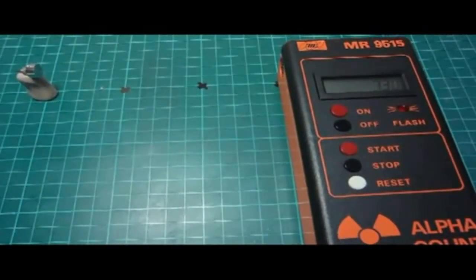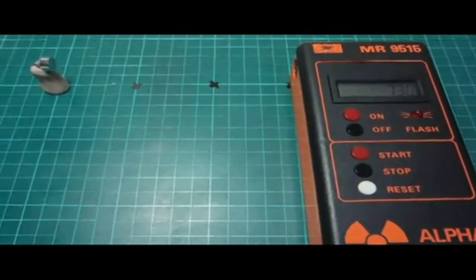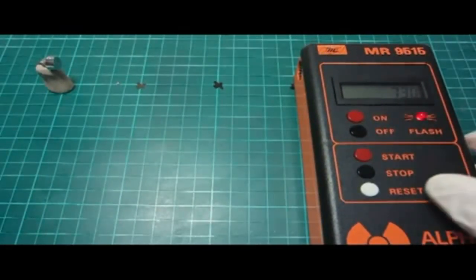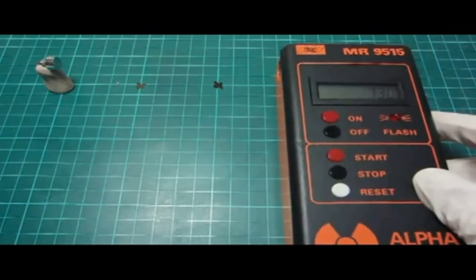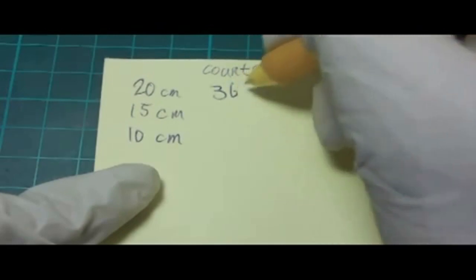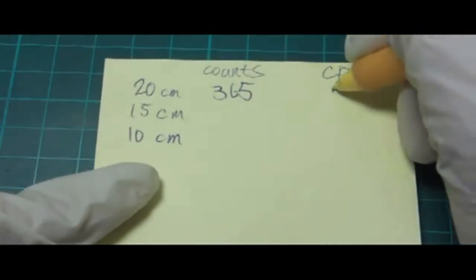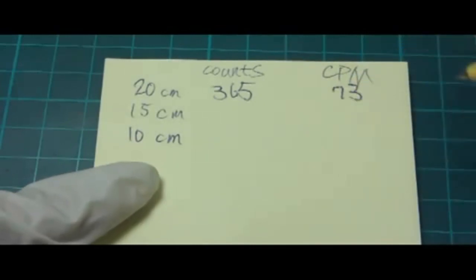And then we move it to 10 centimeters. 365 counts in 5 minutes equals 73 counts per minute.